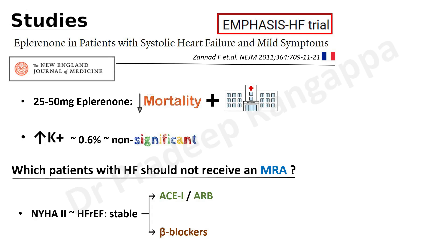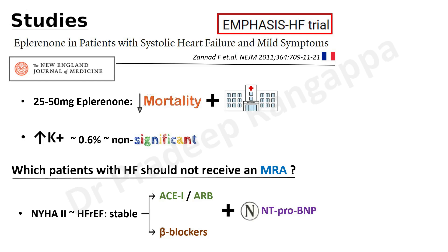The question arises: which patients with heart failure should not receive eplerenone or mineralocorticoid receptor antagonists? Patients with NYHA Class 2 heart failure with reduced ejection fraction who have stable disease, are asymptomatic on ACE inhibitors or ARBs, are on beta-blockers, and have normal NT-proBNP — these are patients where one may not want to initiate eplerenone. In symptomatic patients with high BNP, however, eplerenone has a big role to play.